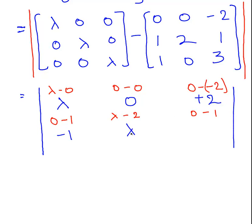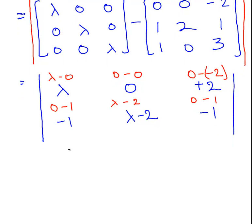Minus 1, lambda minus 2, and minus 1. Now I'm just going to write out the last one. It is minus 1, 0, and lambda minus 3. That's the bottom row.